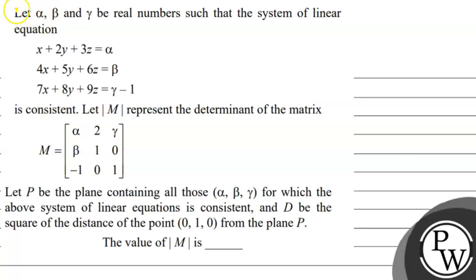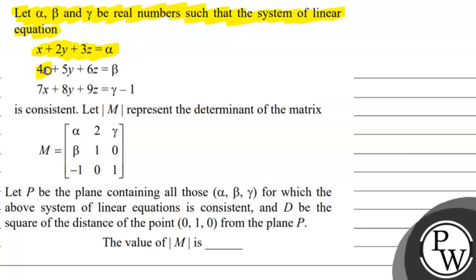Let alpha, beta, gamma be real numbers such that the system of linear equations x plus 2y plus 3z equals alpha, 4x plus 5y plus 6z equals beta, 7x plus 8y plus 9z equals gamma minus 1, is consistent.